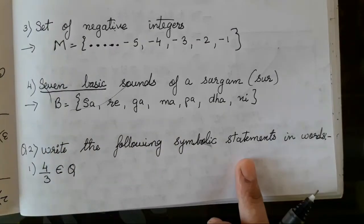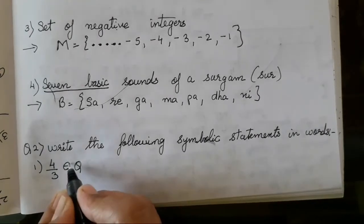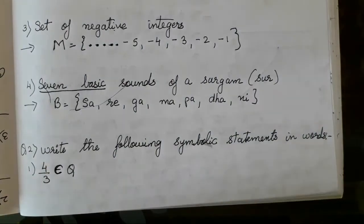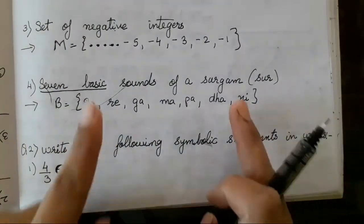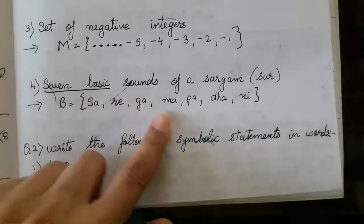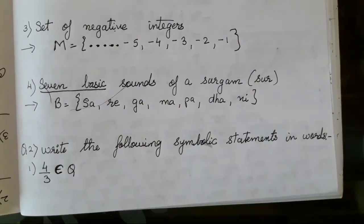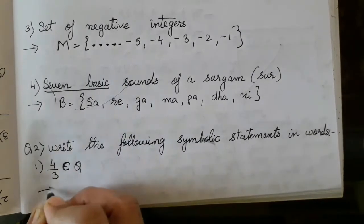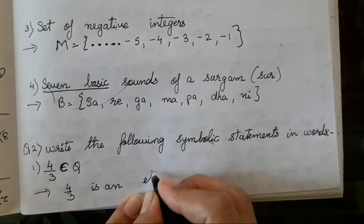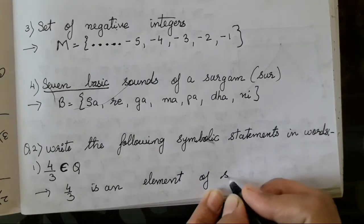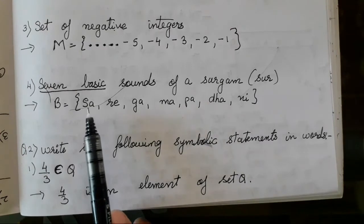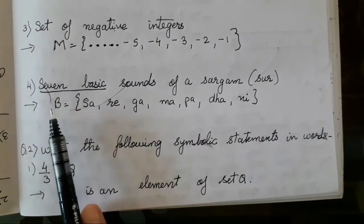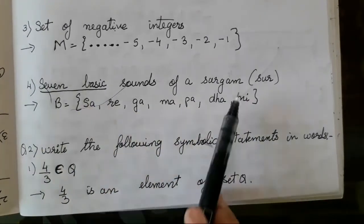Now the next question is write the following symbolic statement in words. Now they have shown us in this form. Now what does this sign indicates? This sign indicates elements. Elements means these are elements. Whenever we group few things into this curve bracket and whatever is present in this bracket, the elements are known as E. So these are the elements of set B. Now they have said write the symbolic form in the statement. So this is what they have shown. The answer is 4 upon 3 is an element of set Q. Now over here how we will say this? Sa is an element of set B. Re is an element of set B. So in this way each is an element over here in this curved bracket.